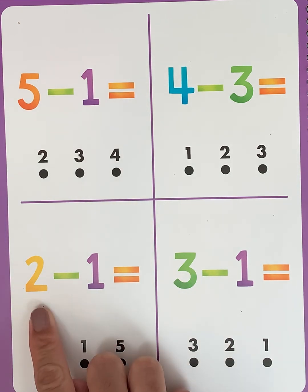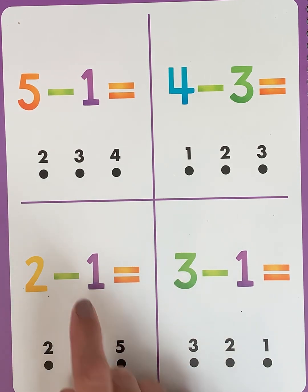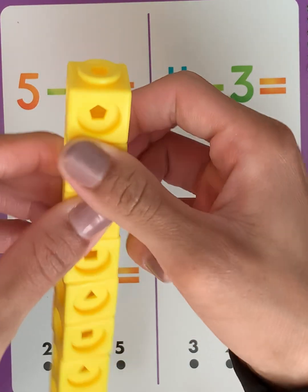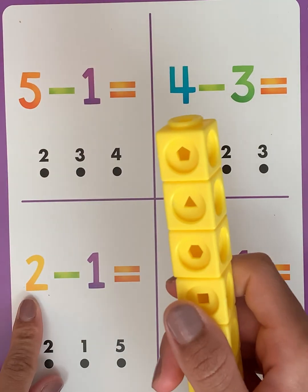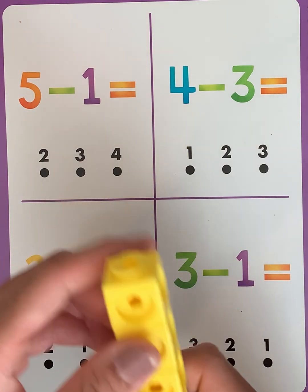Our next problem is 2 minus 1. So we have yellow cubes. We'll start with our first number is 2: 1, 2.